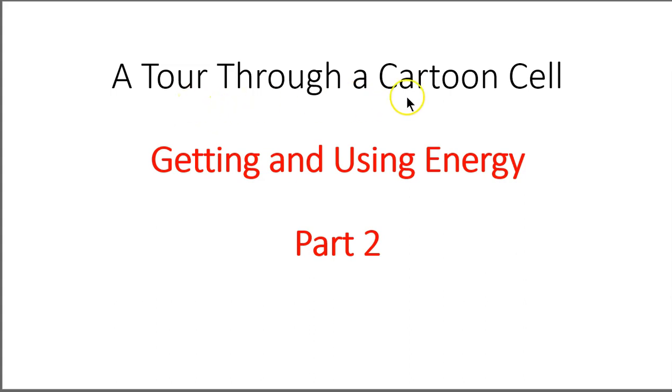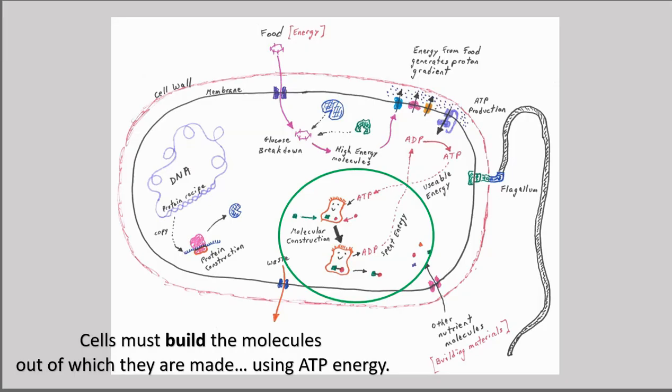This will be part two of a tour through a cartoon cell, focusing on getting and using energy. We're going to pick up the story with molecular construction projects performed by various kinds of proteins. These proteins are going to need a supply of ATP energy. The cell had previously broken down glucose molecules and repackaged the released energy from glucose into ATP molecules that store just the right amount of energy, usable quantities of energy to power this chemistry.